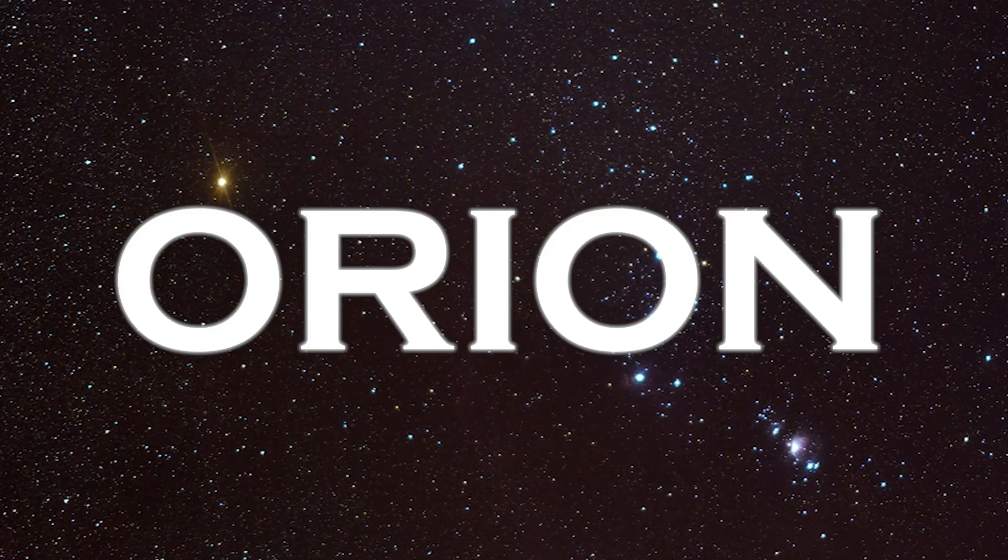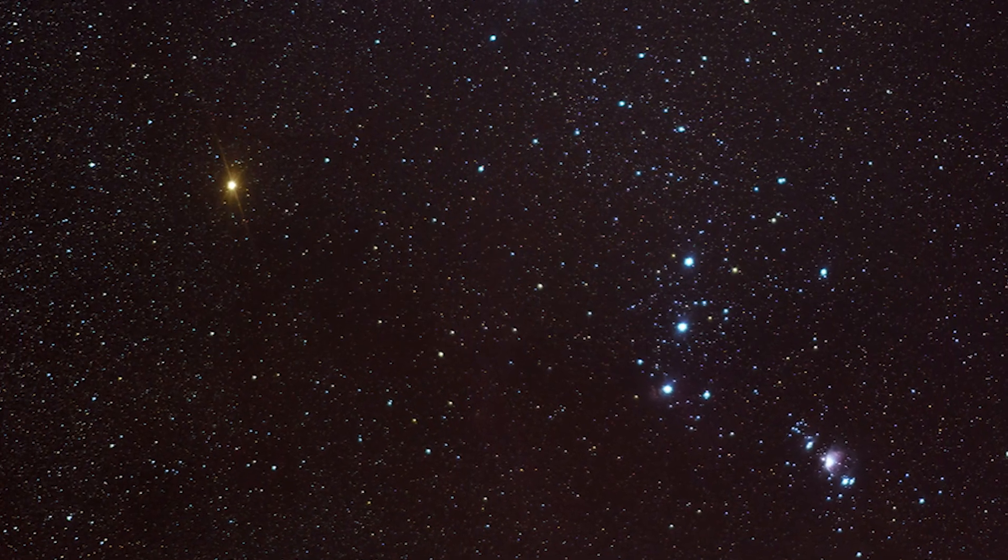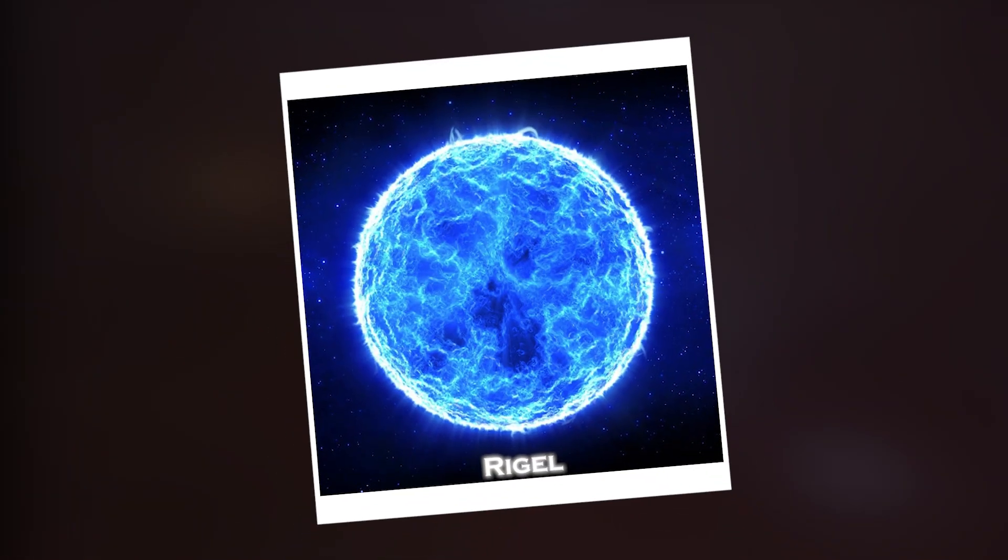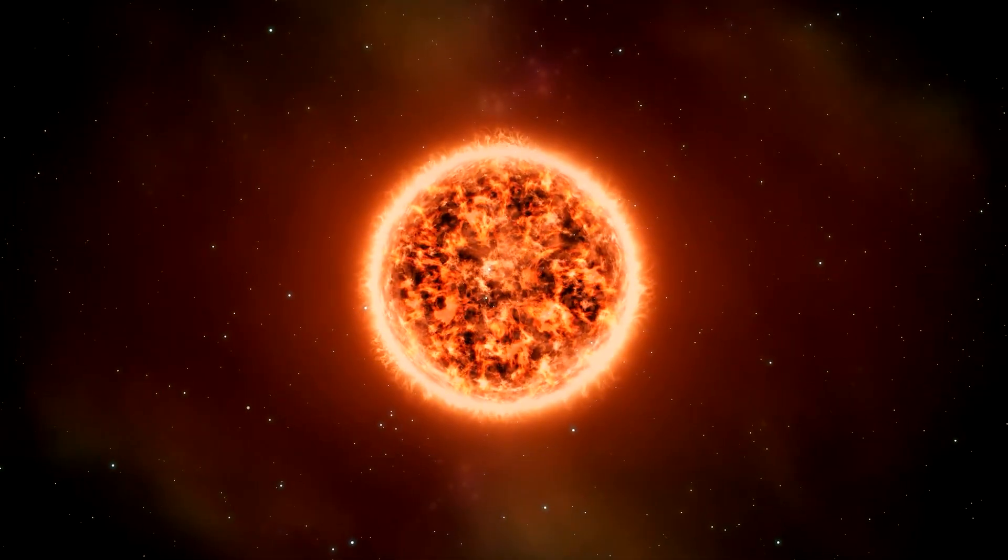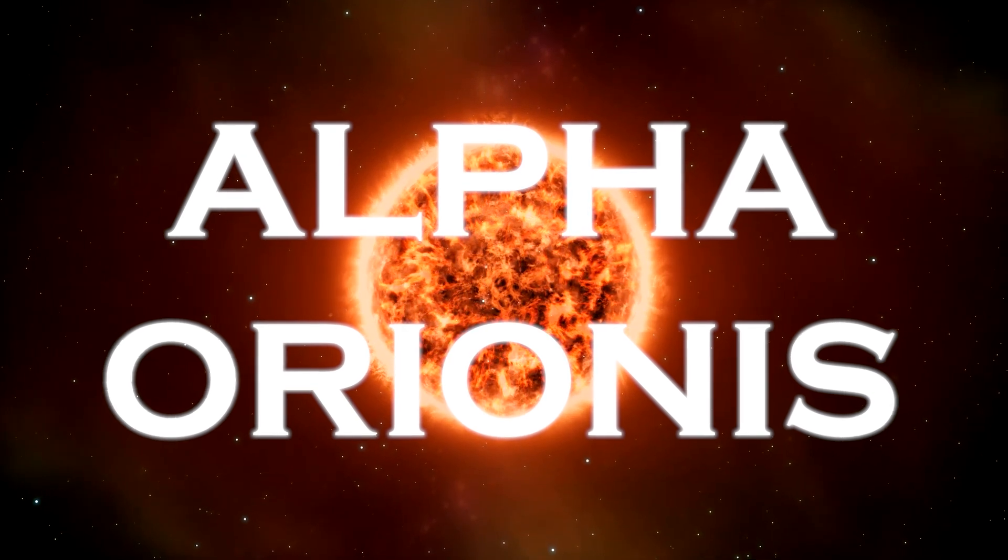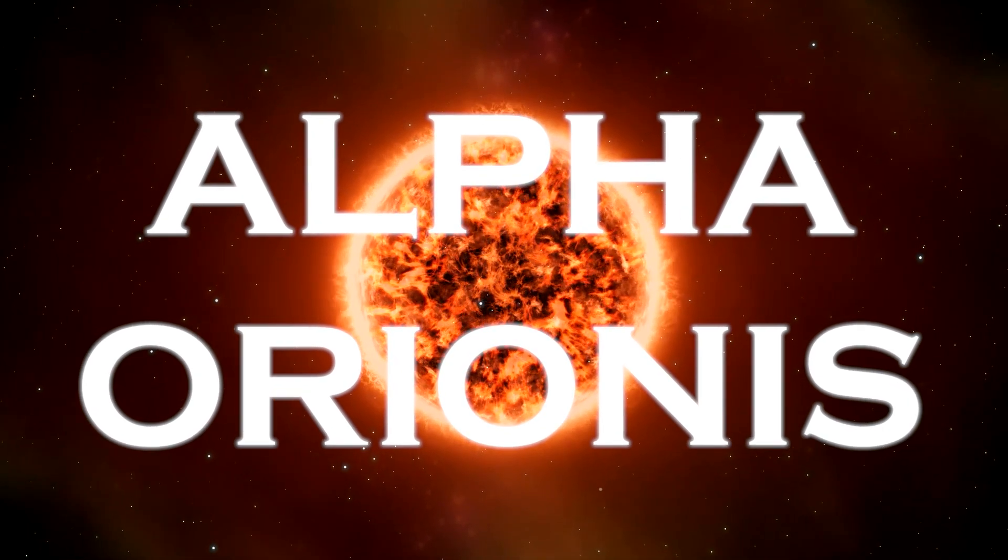Orion, one of the most recognizable constellations, is known for its two main stars, Rigel and Betelgeuse. Betelgeuse, also called Alpha Orionis, is the brightest and largest star in Orion.